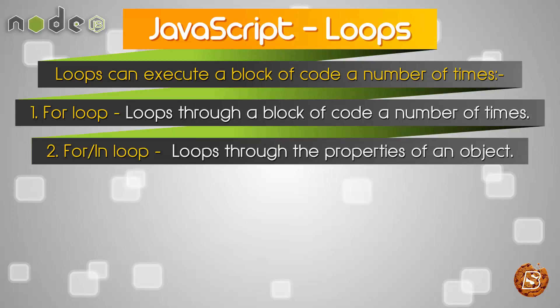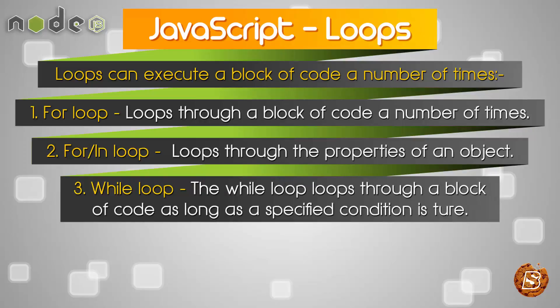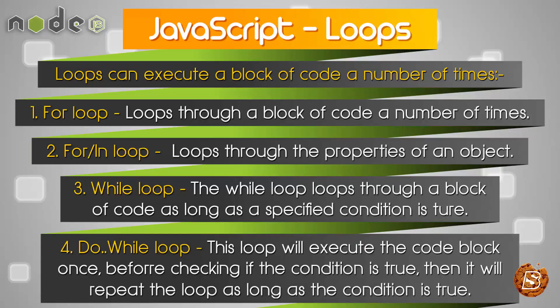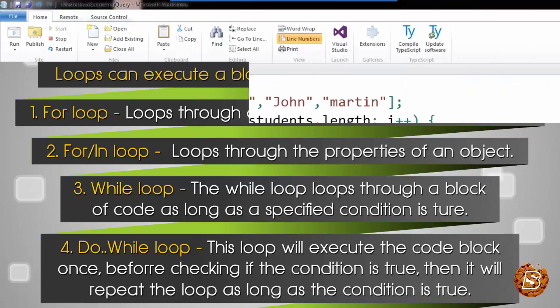For instance, the for-in loop — the second loop we are talking about — is basically used to loop through properties of an object. We will be covering objects later in upcoming lectures. Then we have the while loop, which loops through a block of code as long as a specified condition is true. Then we have the do-while loop, which executes the code block once before checking if the condition is true, then repeats as long as the condition is true. So in do-while, the loop will execute at least once whether the condition is true or not. Now let's go ahead and explore them with code examples.